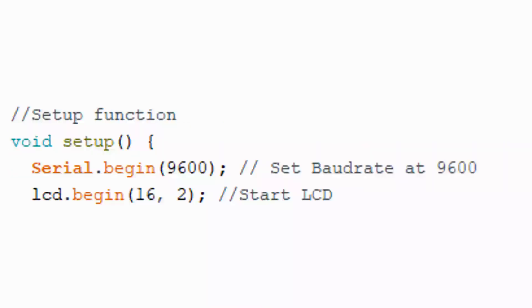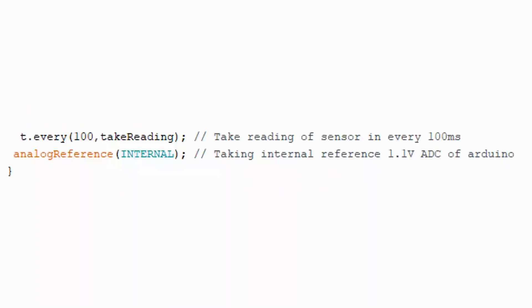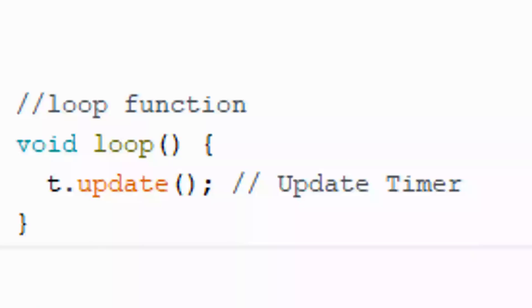In the setup function, we begin serial monitoring at 9600 baud and LCD begin. Then the pin is declared as input. These two lines might be new for you: t.every(100, takeReading) takes reading of sensor every 100 milliseconds, and analogReference(INTERNAL) sets the internal reference of Arduino to 1.1 volt.